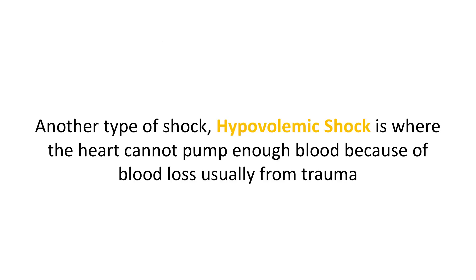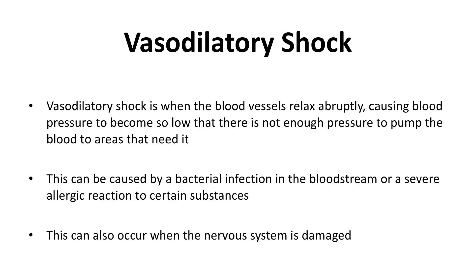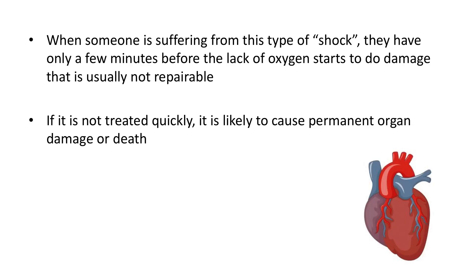Because of this shock, the body has very low blood pressure. Another type of shock, hypovolemic shock, is where the heart cannot pump enough blood because of blood loss, usually from trauma. Vasodilatory shock is when the blood vessels relax abruptly, causing blood pressure to become so low that there's not enough pressure to pump blood to areas that need it. This can be caused by a bacterial infection in the bloodstream, a severe allergic reaction, or when the nervous system is damaged. When someone is suffering from this type of shock, it means not enough oxygen is reaching their vital organs. They only have a few minutes before the lack of oxygen starts to do damage that is usually not repairable, likely causing permanent organ damage or death.